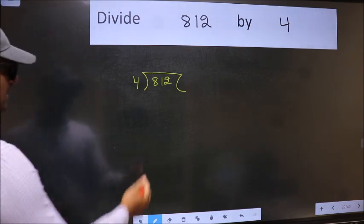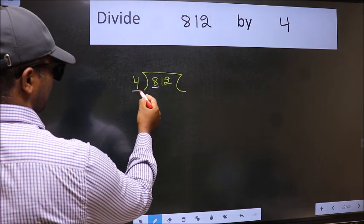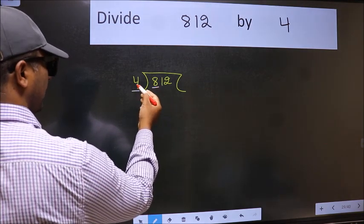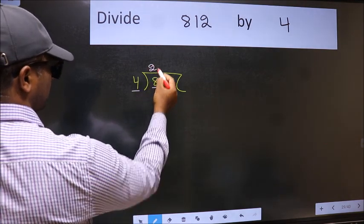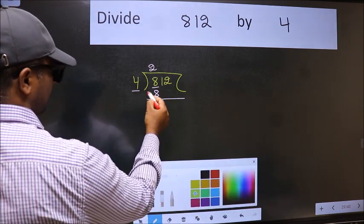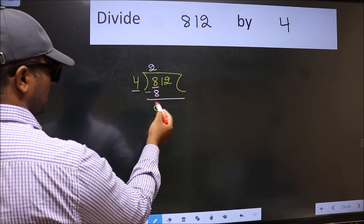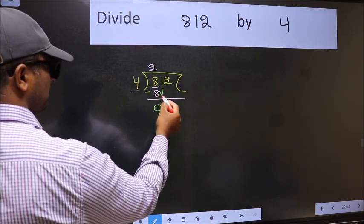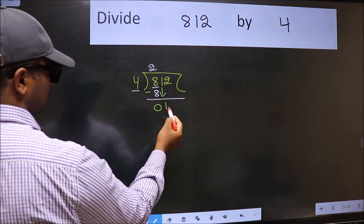Next. Here we have 8 and here 4. When do we get 8 in the 4 table? 4 times 2 is 8. Now we should subtract. We get 0. After this, bring down the beside number. So 1 down.